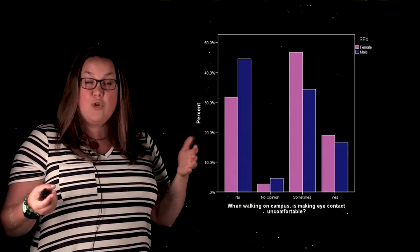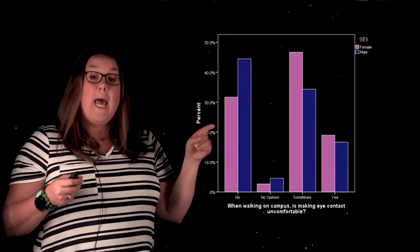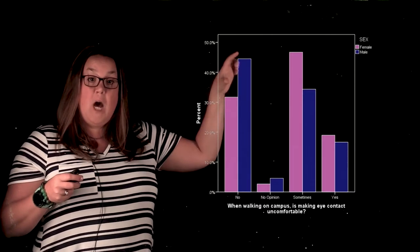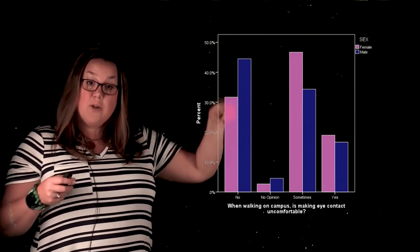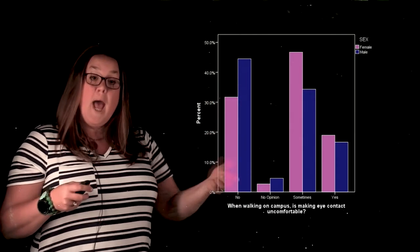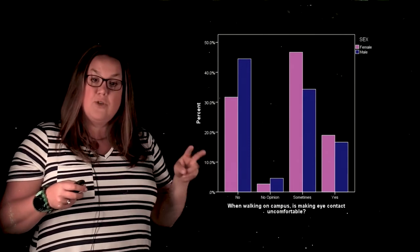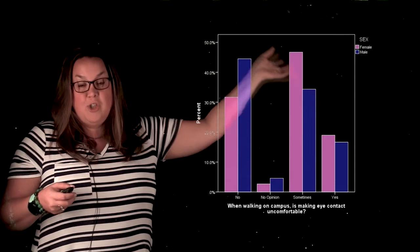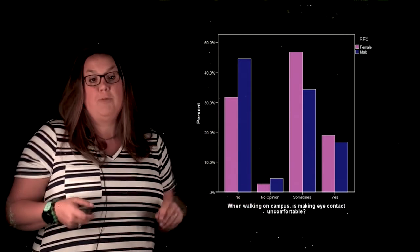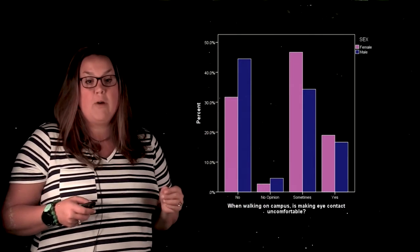If that's true, what we would expect to see in a clustered bar graph is the height of the bars to be very different amongst the different groups. And you actually can see that that is true. If you did analysis for these two variables, you would actually notice that there is a relationship between sex and how uncomfortable it is to make eye contact when walking around campus.